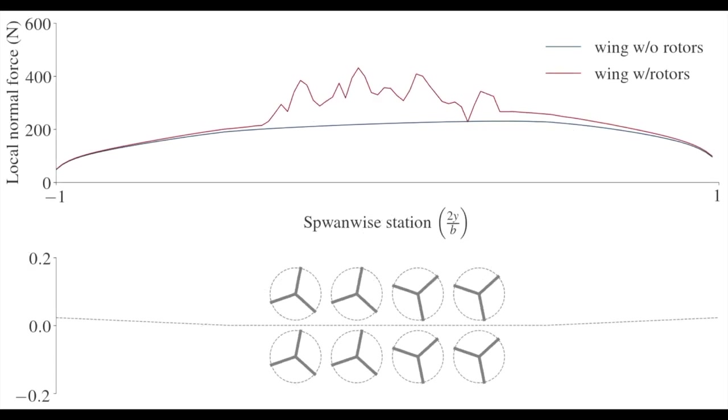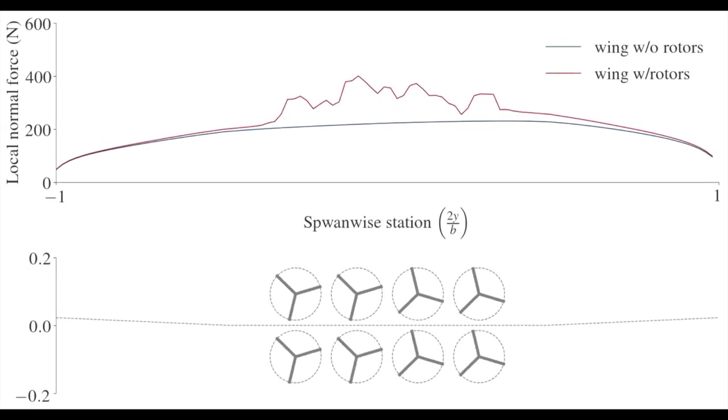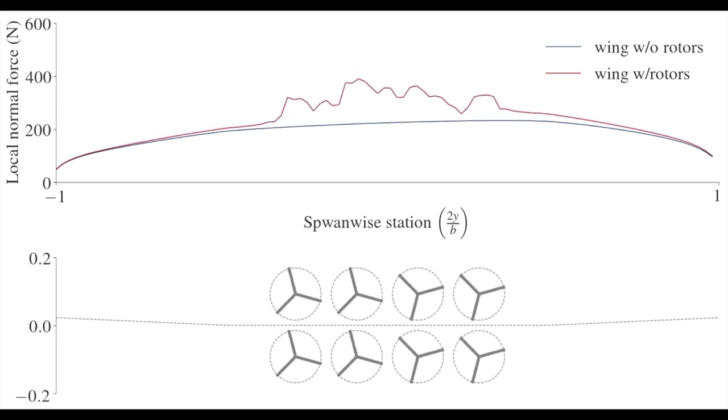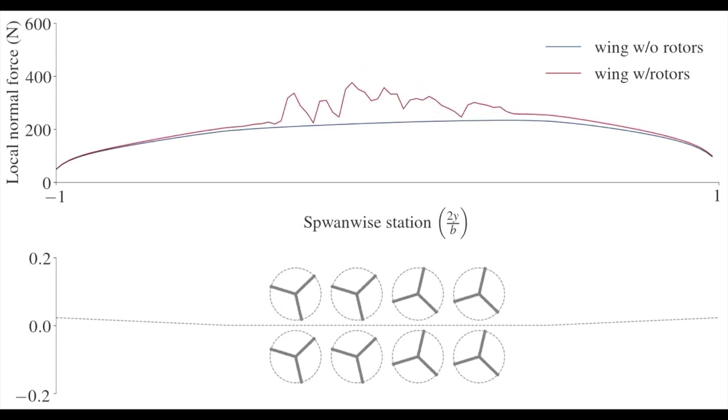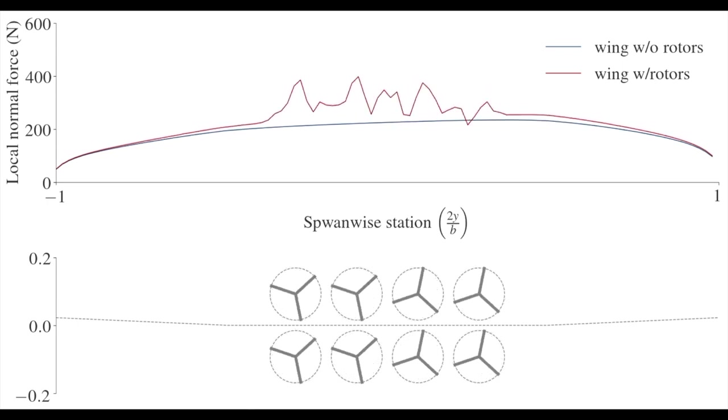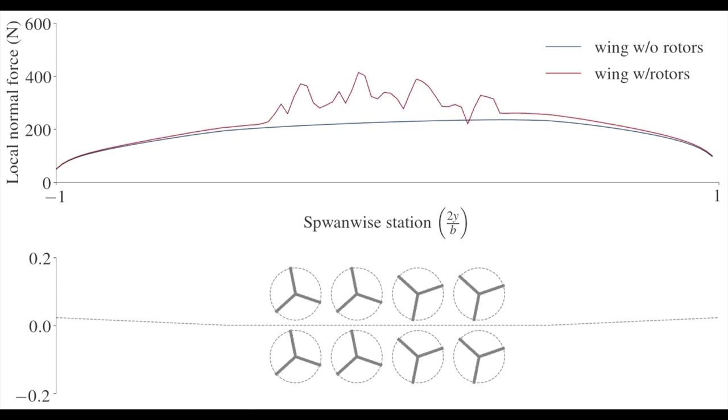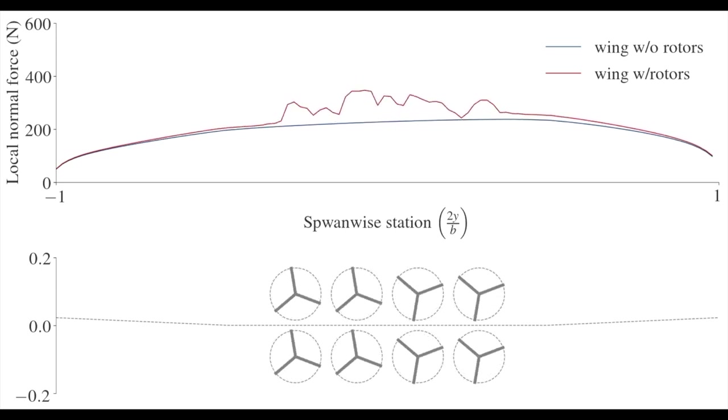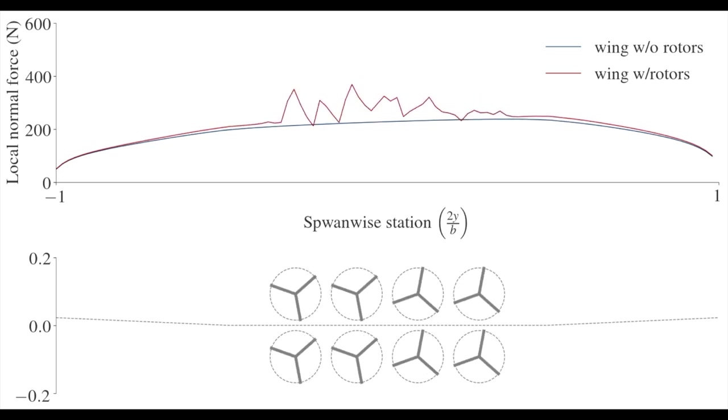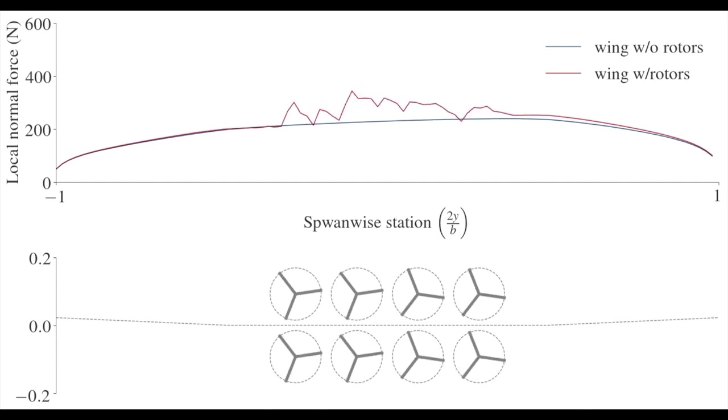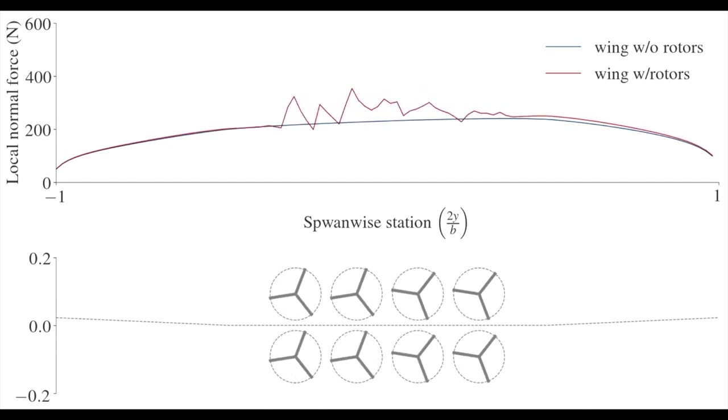As we can see in this animation, the force distribution is changed by the rotor wakes, as we would expect. We have portions of the distribution that are increased relative to the nominal case, that is the case with no rotors present, as well as portions that are decreased relative to the nominal. Interestingly, the effects extend beyond just the region behind the rotors. And we can see that the force distribution is also affected in the outboard sections of the wing. Overall, we expected the rotor wakes to decrease the overall normal force seen by the wing, since in our case, the rotors are extracting momentum from the fluid domain.